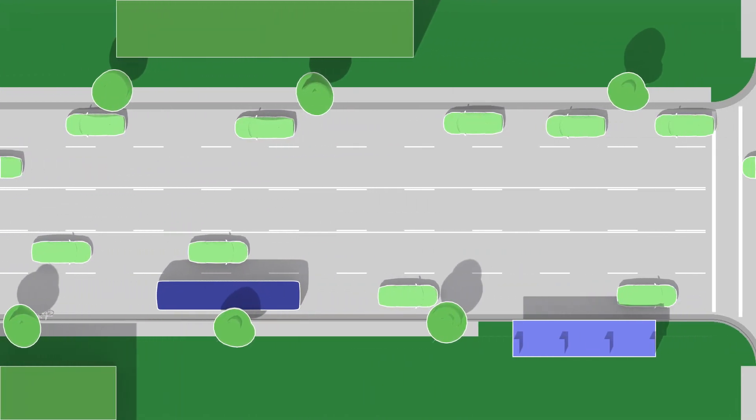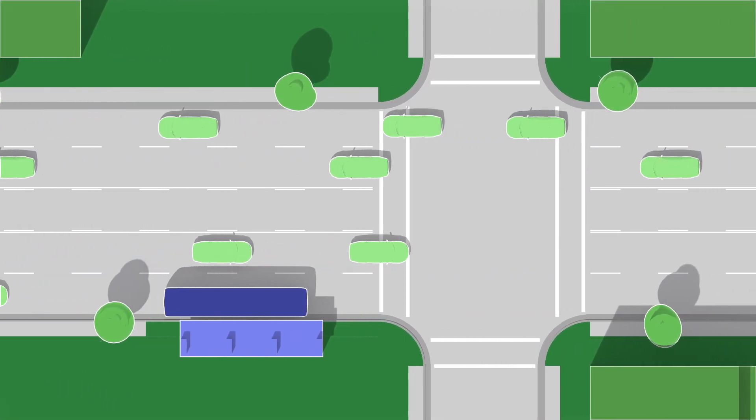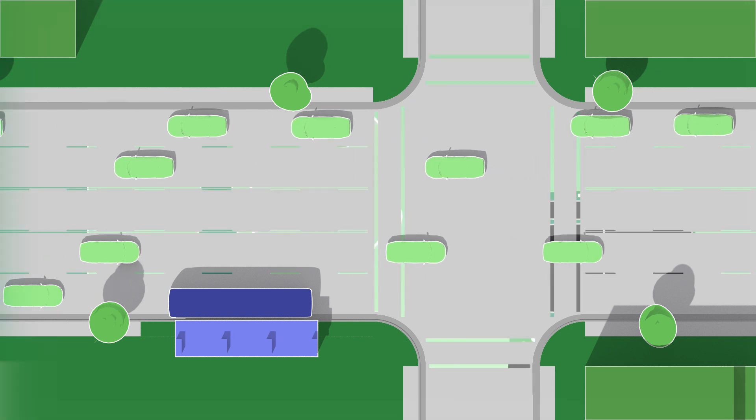In many cases, the Silver Line will operate very similar to current rapid bus service, sharing the road with cars and bikes using existing traffic lanes.